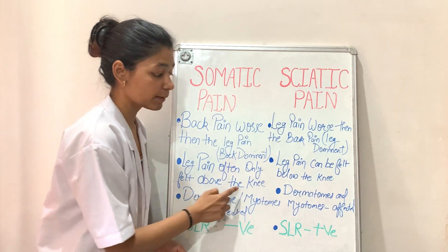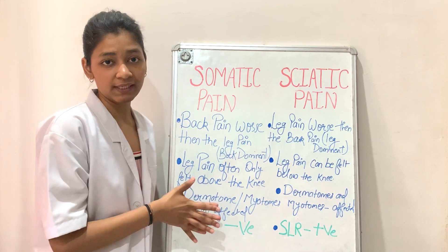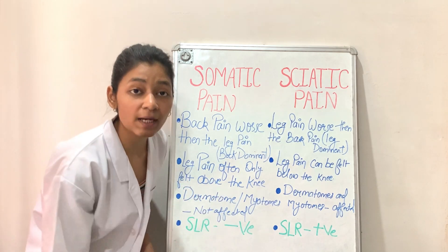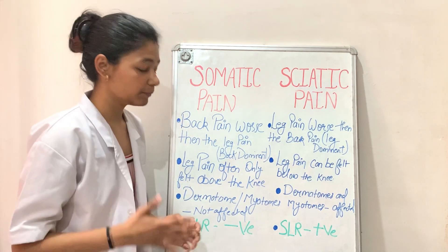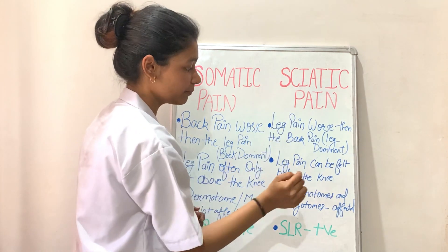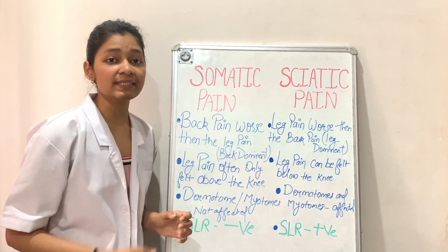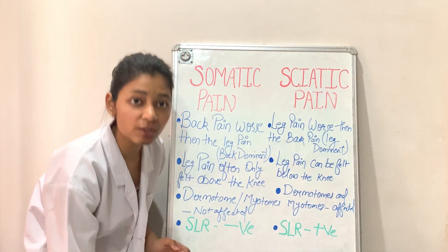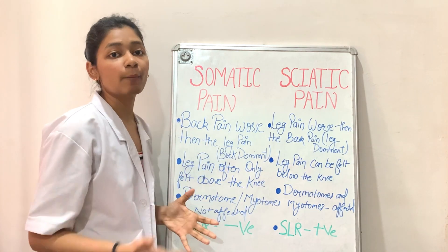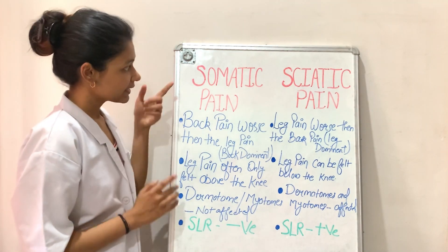The next differentiating feature is the location of leg pain. In somatic pain, the leg pain is often only felt above the knee — in the majority of cases the patient will say the pain is only up to or above the knee and does not go below. On the other hand, in sciatic pain the leg pain can be felt below the knee, and the patient will say the pain goes all the way to the foot.